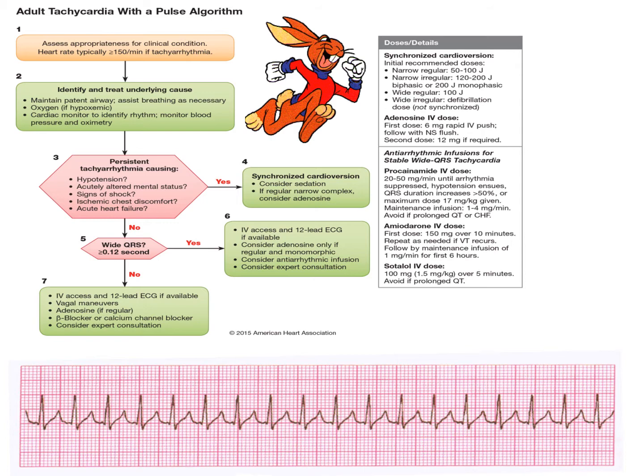Sometimes vagal maneuvers are enough for the parasympathetic nervous system to take over and lower the heart rate. If that doesn't work, we can try adenosine, a beta blocker, a calcium channel blocker, or consider expert consultation. If I have a patient with a tachyarrhythmia showing signs of stress, I would want a cardiologist there. If the patient is symptomatic — no blood pressure, not enough cerebral perfusion — then we go to synchronized cardioversion with electricity.